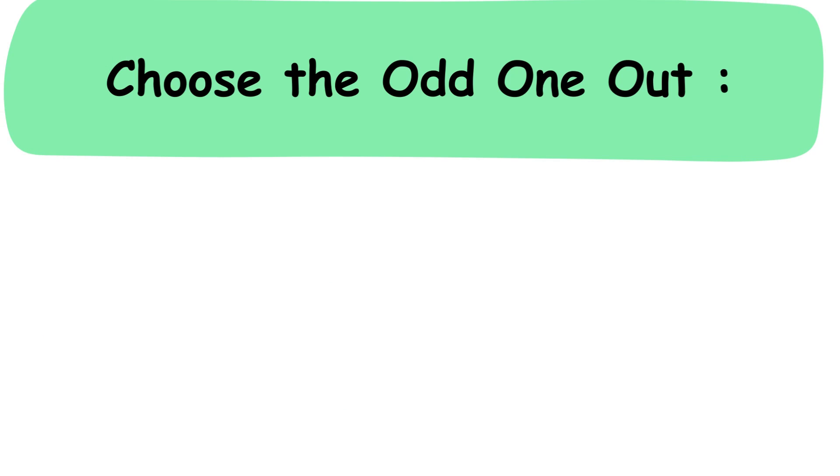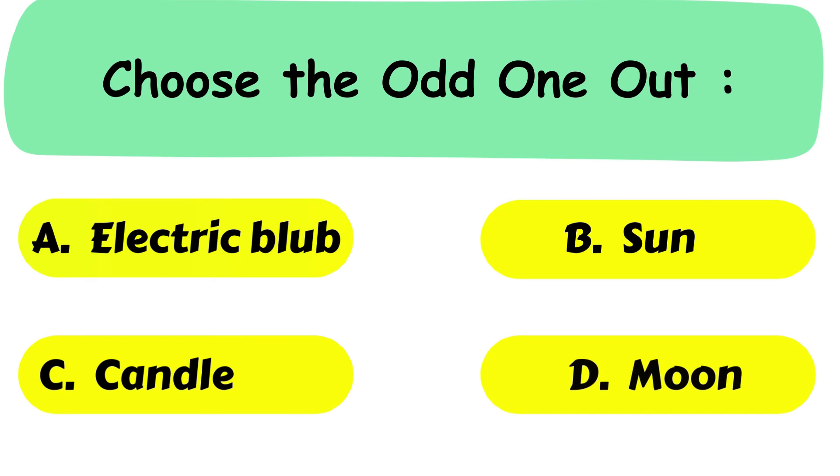Question No. 26. Choose the odd one out. A. Electric bulb. B. Sun. C. Candle. D. Moon.